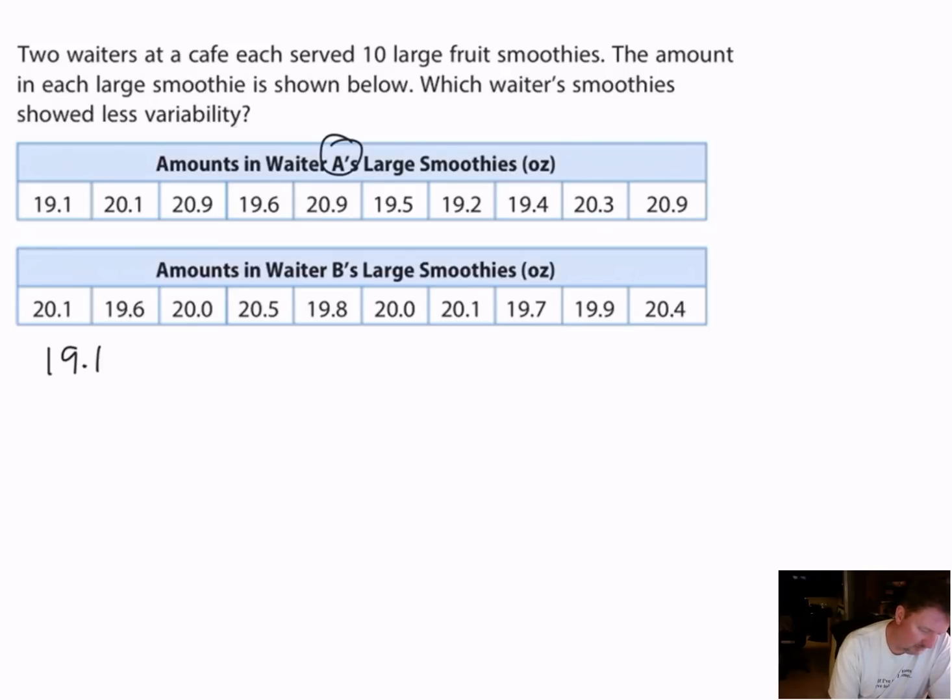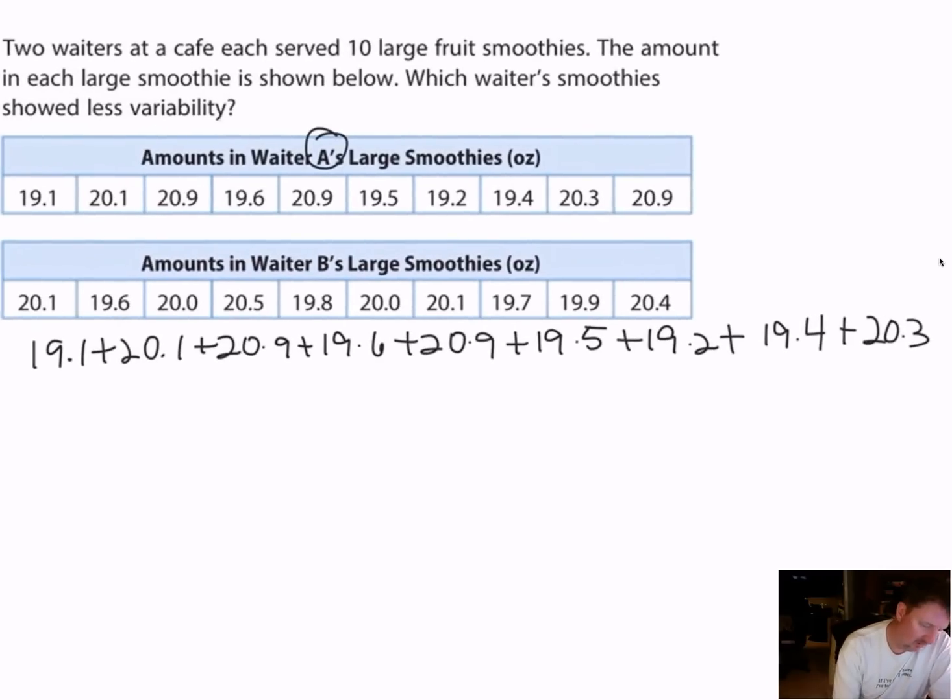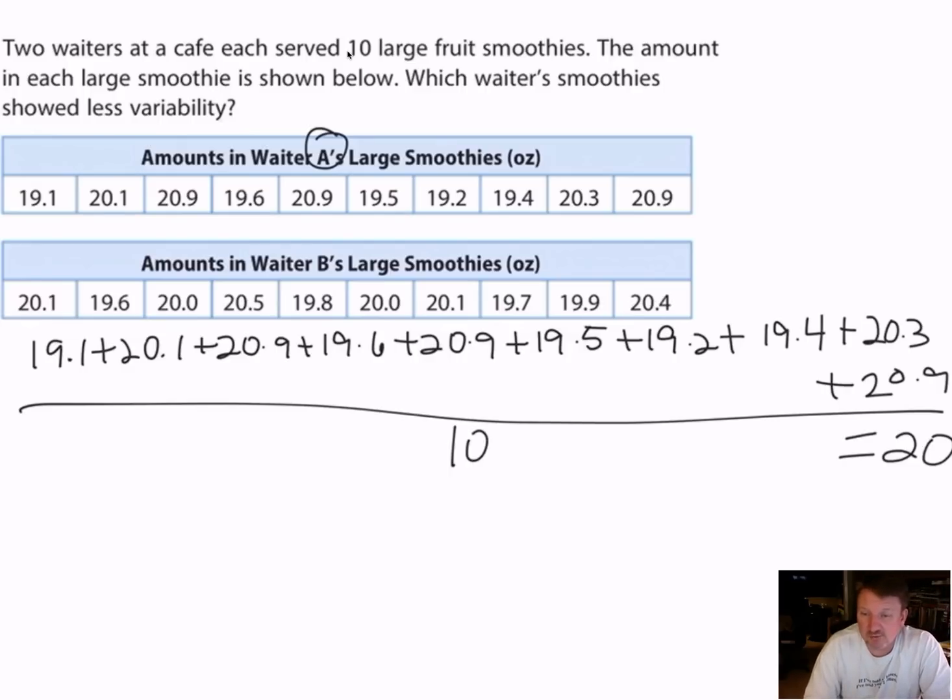So I say 19.1, and I have one, two, three, four, five, well it tells me right there, ten. So I know I'm going to divide by ten. So if I take all that and I divide by ten, then I'm going to get approximately a mean of 20 ounces per serving. So now I want to find the mean absolute deviation.